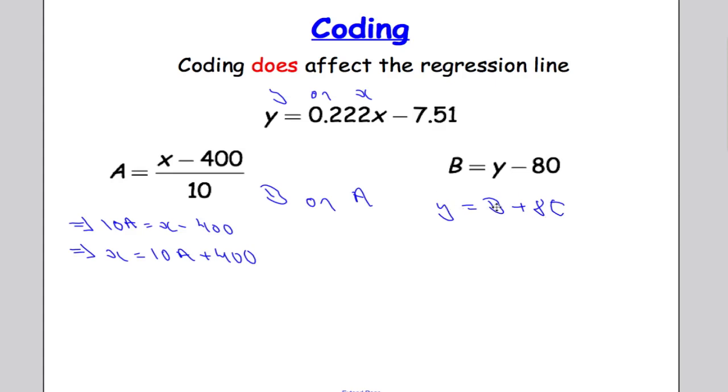So I now have b and a in terms of y and x. So I could actually substitute these back into the formula. So it's a little bit like what we did way back when we did coding the mean only this time we've got two variables.